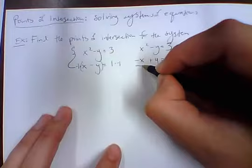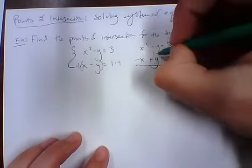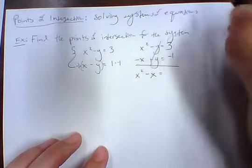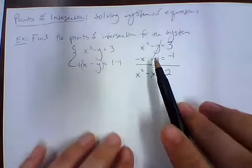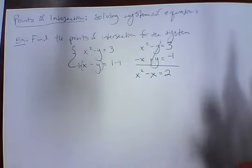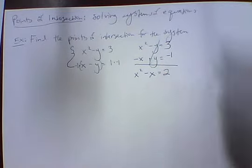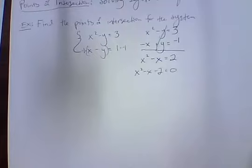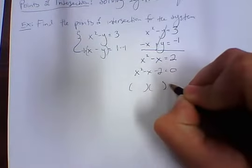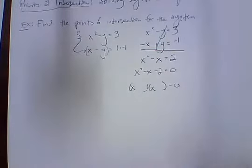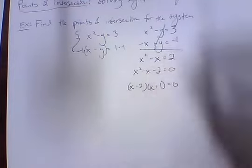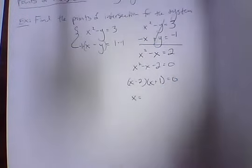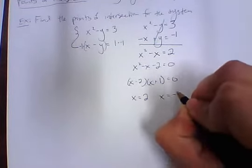Adding the two equations, the y terms cancel out. We're left with x squared minus x equals 2. Moving the 2 over and setting it equal to 0: x squared minus x minus 2 equals 0. Factoring gives (x minus 2)(x plus 1) equals 0. Using the zero product property, we get x equals 2 and x equals negative 1.